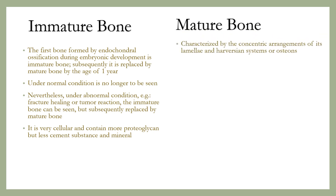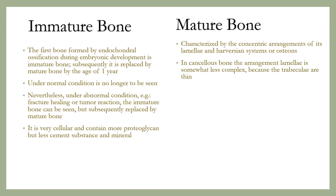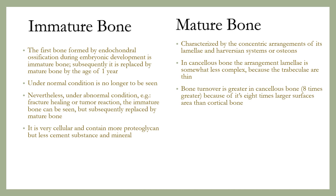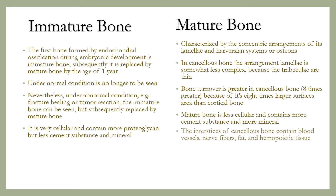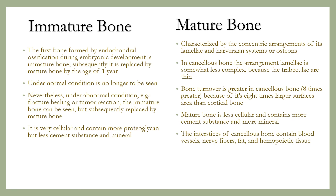Mature bone is characterized by the concentric arrangements of its lamellae and Haversian systems, or osteons. In cancellous bone, the arrangement of the lamellae is somewhat less complex because the trabeculae are thin. The bone turnover is greater in cancellous bone, as it has eight times greater surface area than cortical bone. Mature bone is less cellular and contains more cement substance and more mineral. The interstices of cancellous bone contain blood vessels, nerve fibers, fat, and hematopoietic tissue.